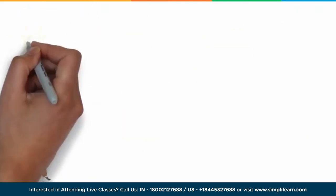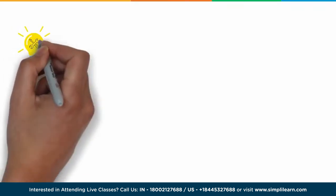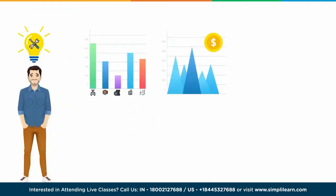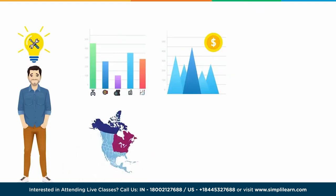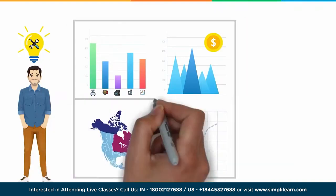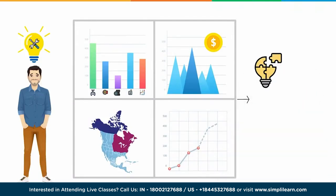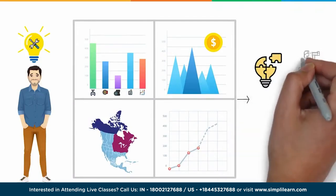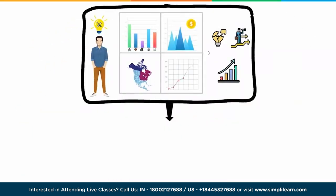Ben slowly realized he needed something new. What if Ben had a tool that could track his store's inventory and sales — a geographical map that recognizes demand for various products from different regions, a forecast feature to predict economic fluctuations, and help Ben visualize every detail on one single dashboard? This software could solve many business problems and identify new opportunities. Such types of software tools are called business intelligence tools, and one such tool is Tableau.